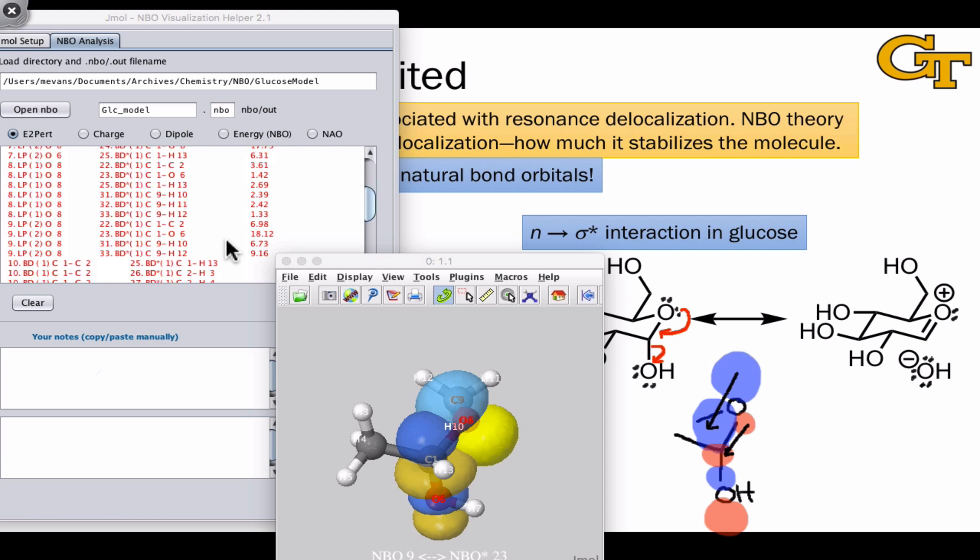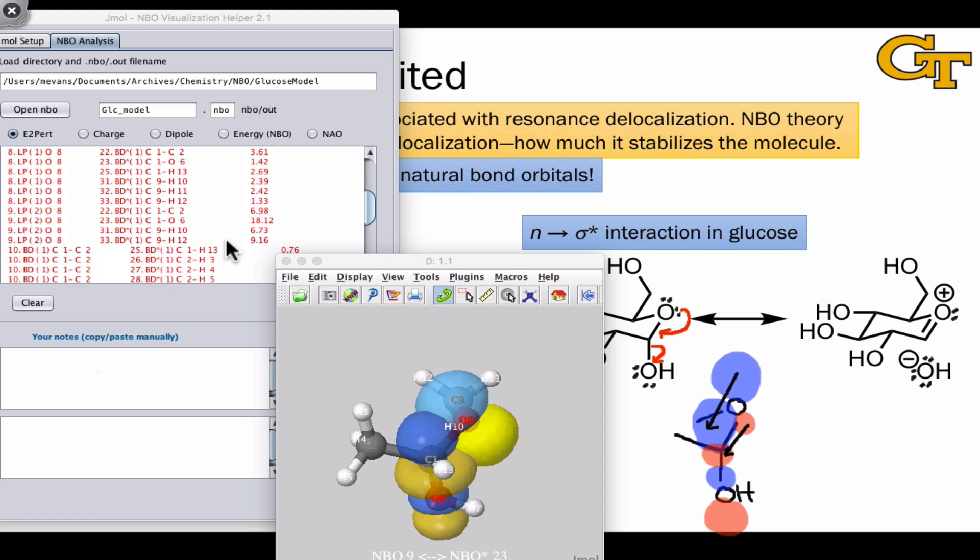Just how important is this interaction? Well, if we look at this in the table of interactions calculated by the NBO program, we see that this is worth about 18 kilocalories per mole. It's the interaction between a lone pair at oxygen 8 and the sigma-antibonding orbital of the CO6 bond. That 18 kilocalories per mole is dwarfing most of these other interactions and speaks to the importance of this interaction in stabilizing the molecule in this arrangement.